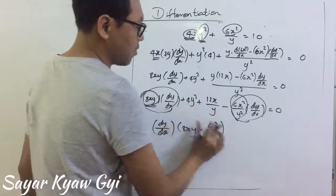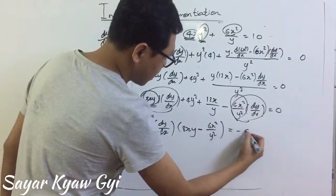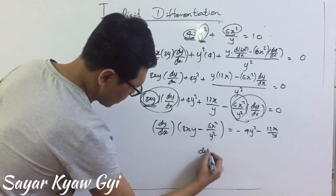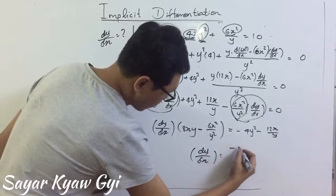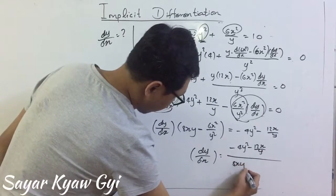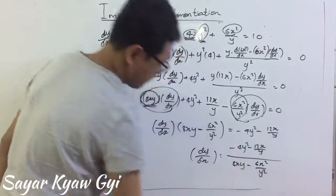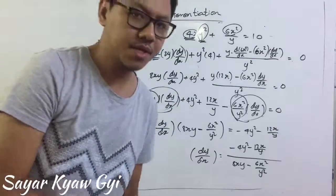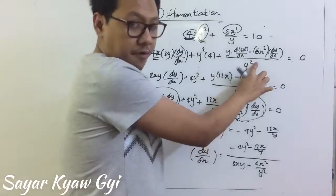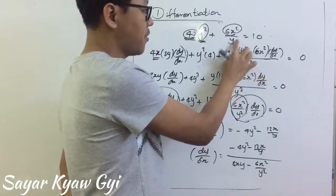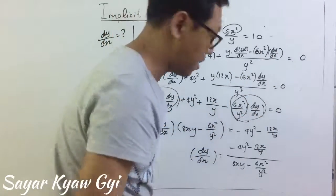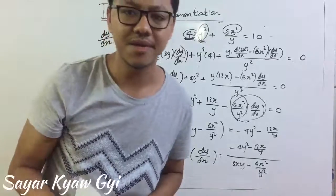These two things will be moved to the other side, so it will be negative 4y squared minus 12x over y. And then dy by dx is equal to negative 4y squared minus 12x over y, all over 8xy minus 6x squared over y squared. This is how you do implicit differentiation using the quotient rule: the denominator is squared first, then copy the denominator and differentiate the numerator, minus copy the numerator and differentiate the denominator. Thanks for watching — see you in the next video.